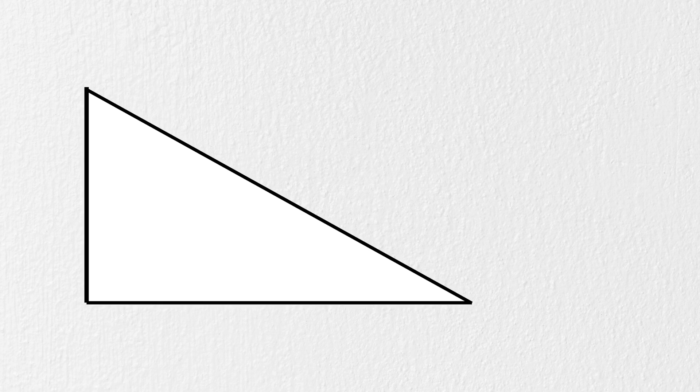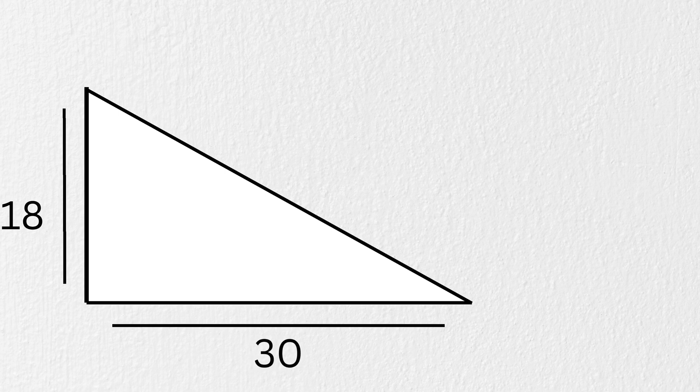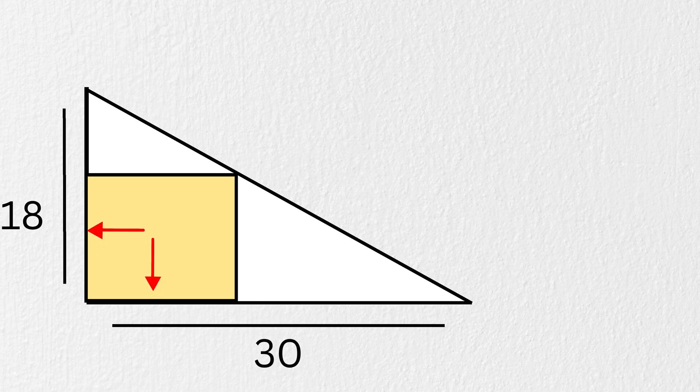We're given a right triangle with a height of 18 units and a base of 30 units. Now inside this triangle, a square is neatly placed so that one side lies along the height, another along the base, and its top corner touches the hypotenuse, just like this. Your mission, find the area of that square.